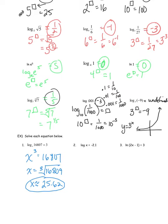For example two, I'm going to write it in exponential form to dig out that x. No base is written, so it's automatically base 10. The power is what the log is equal to, and the leftover value is x. So 10 to the negative 2.1 equals x, and typing that into the calculator gives about 0.0079.